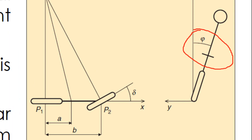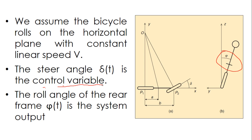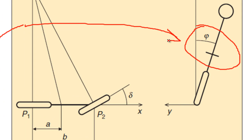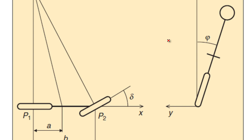We will assume that the control variable — the variable that the rider can change — is delta. The driver will change this steer angle delta, and this angle will try to stabilize the roll angle phi. So in this case, we have a model in which the input variable is angle delta and the output variable is also angle phi. We assume that the steer angle is vertical, so lambda will be 90 degrees.